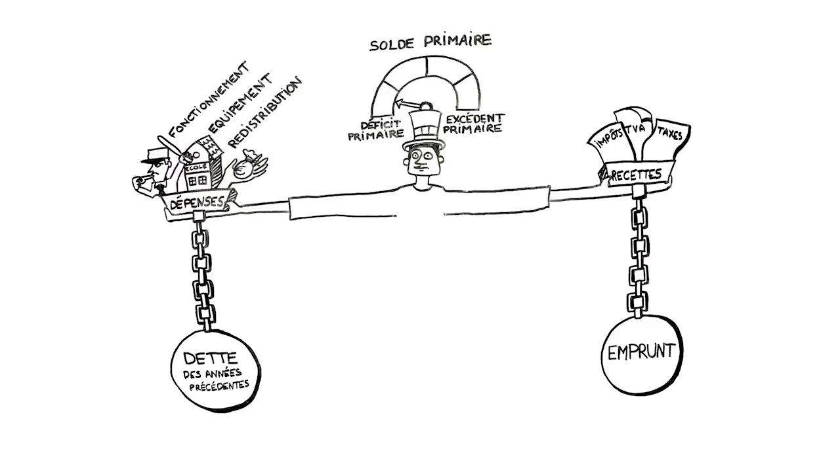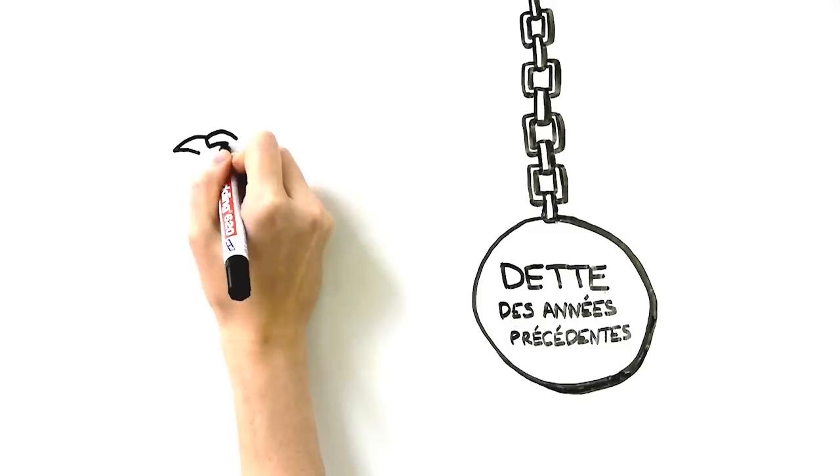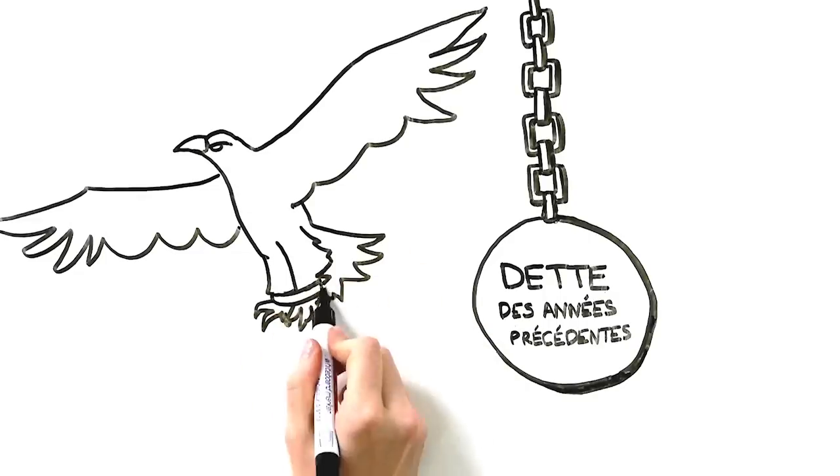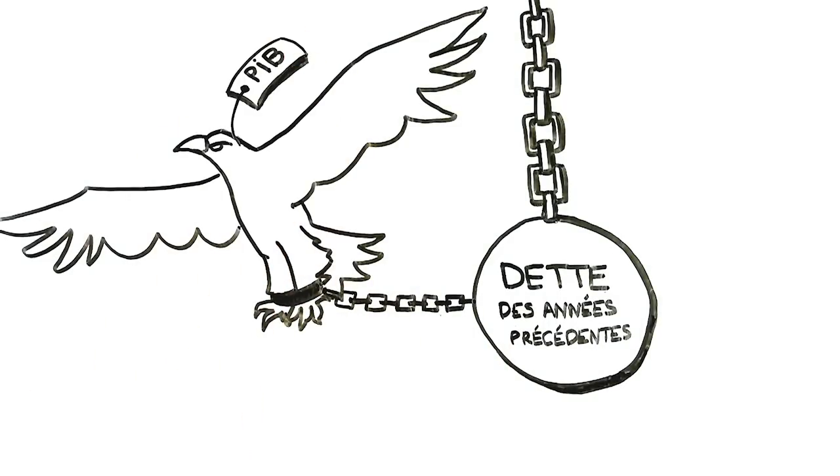But at what point does a country's debt become unsustainable? First, economists look at the ratio of GDP, which is an indicator of the country's wealth directly linked to growth, to the debt.